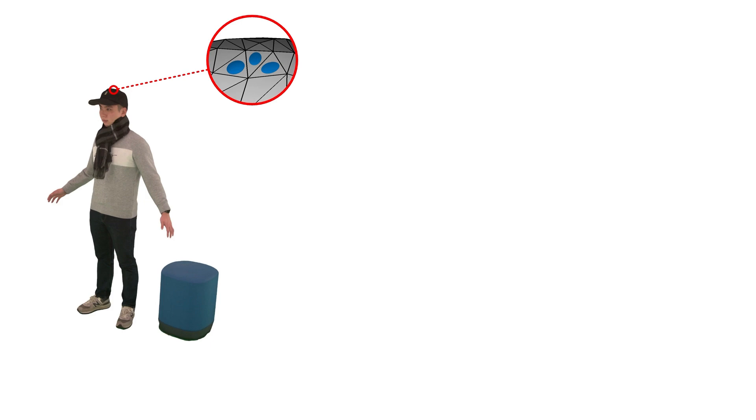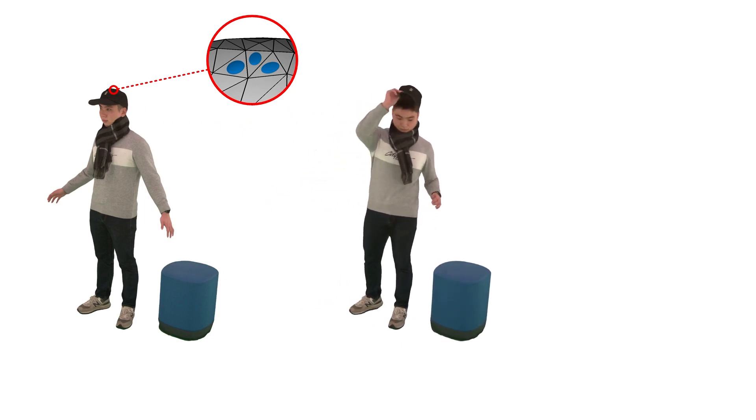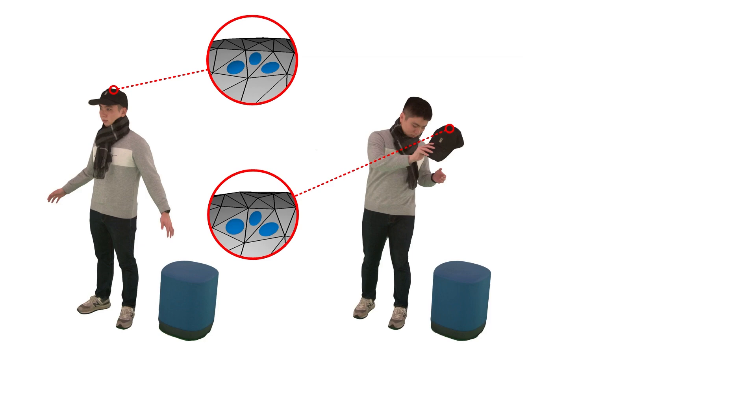We call this representation Gaussian surfaces. For topology-consistent surfaces, like the cap here, Gaustar consistently tracks mesh faces and Gaussians.